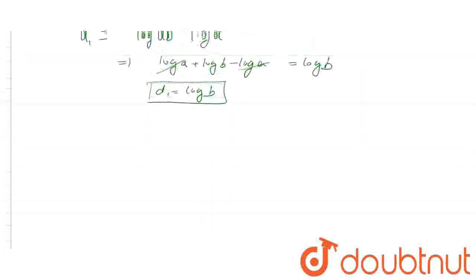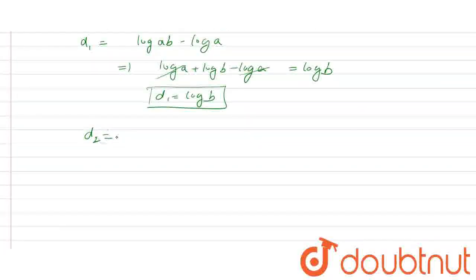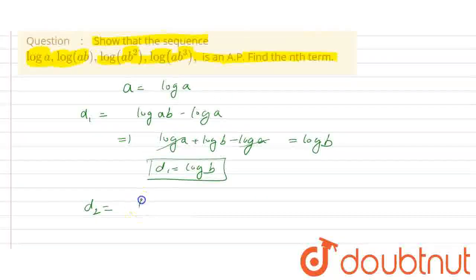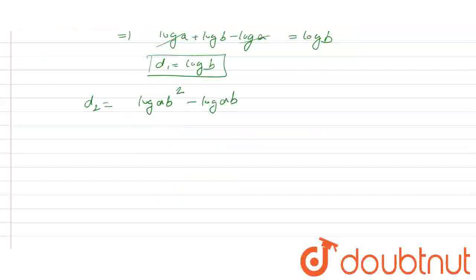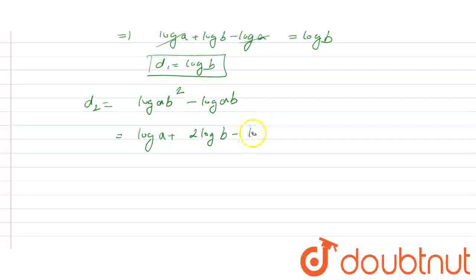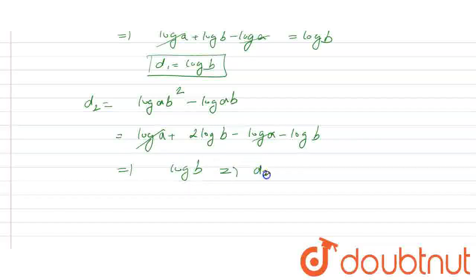Now we check d2, because if common differences are equal then this is an AP. d2 means third term minus second term, so log(ab²) minus log(ab). Using log(mn) = log(m) + log(n), this is log(a) + log(b²). Using log(m^n) = n·log(m), this becomes 2·log(b) minus log(a) minus log(b). The log(a) terms cancel, and 2·log(b) minus log(b) is log(b). So d2 is equal to log(b).